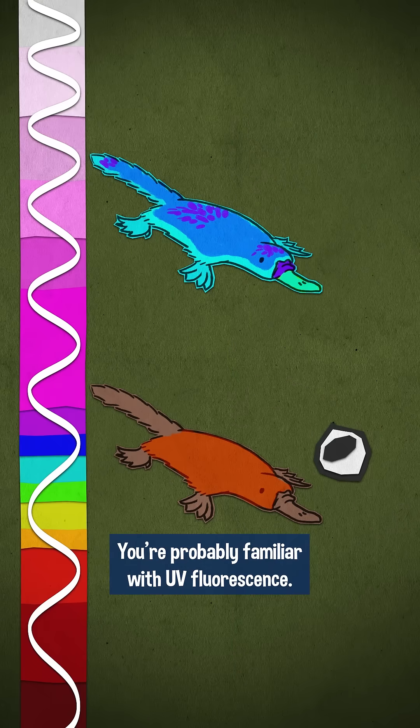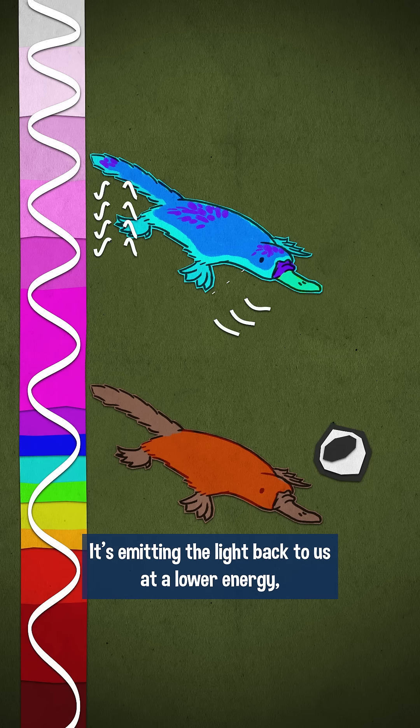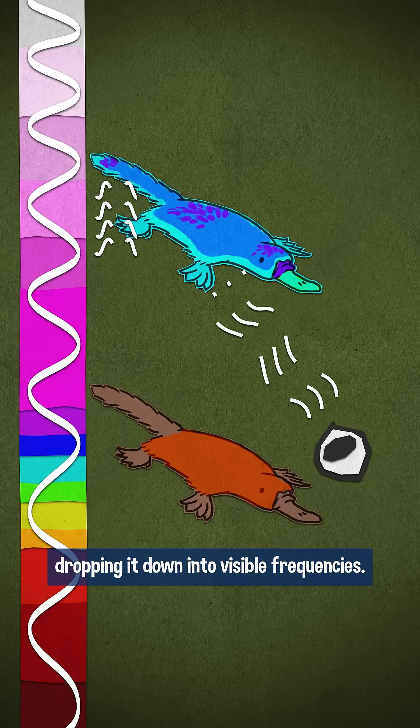You're probably familiar with UV fluorescence. It's why some stuff glows under a black light. It's emitting the light back to us at a lower energy, dropping it down into visible frequencies.